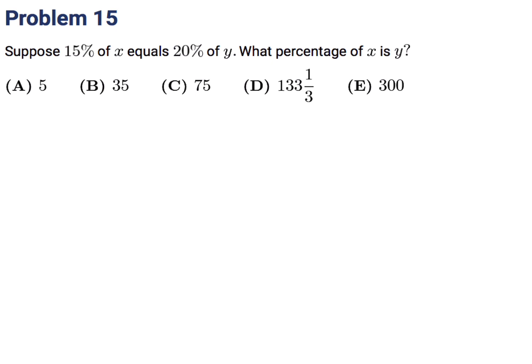Suppose 15% of x equals 20% of y. What percentage of x is y? So 0.15x = 0.2y. Multiplying through by 5 gives 0.75x = y. That means y is 75% of x. So number 15, the answer is C.